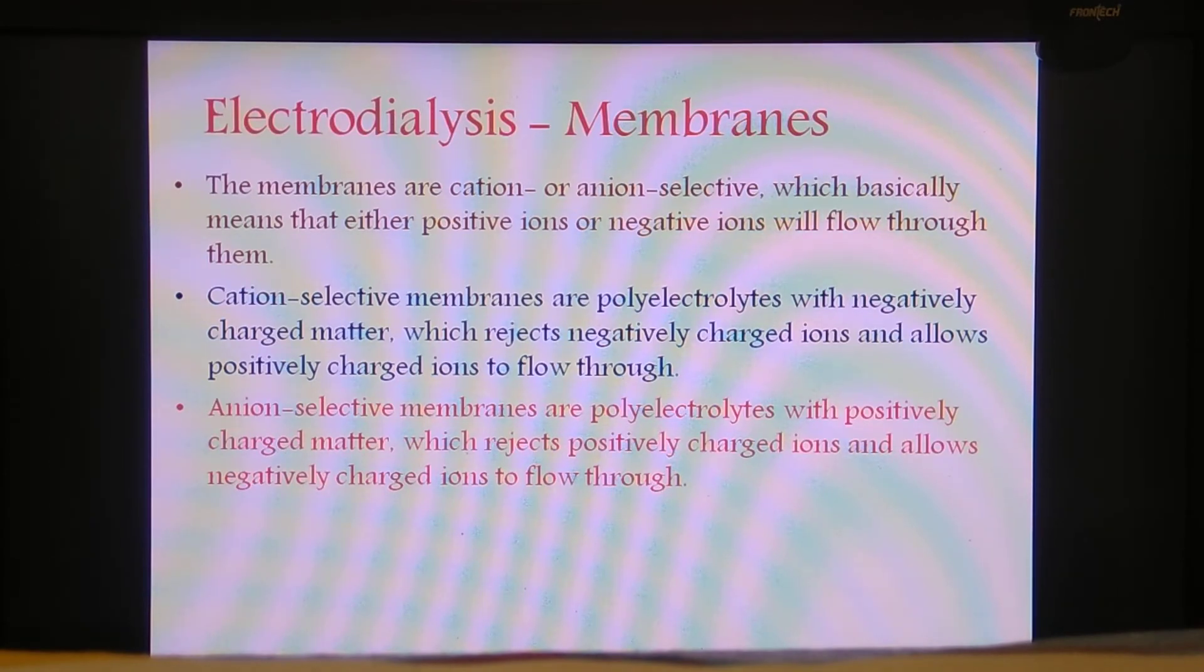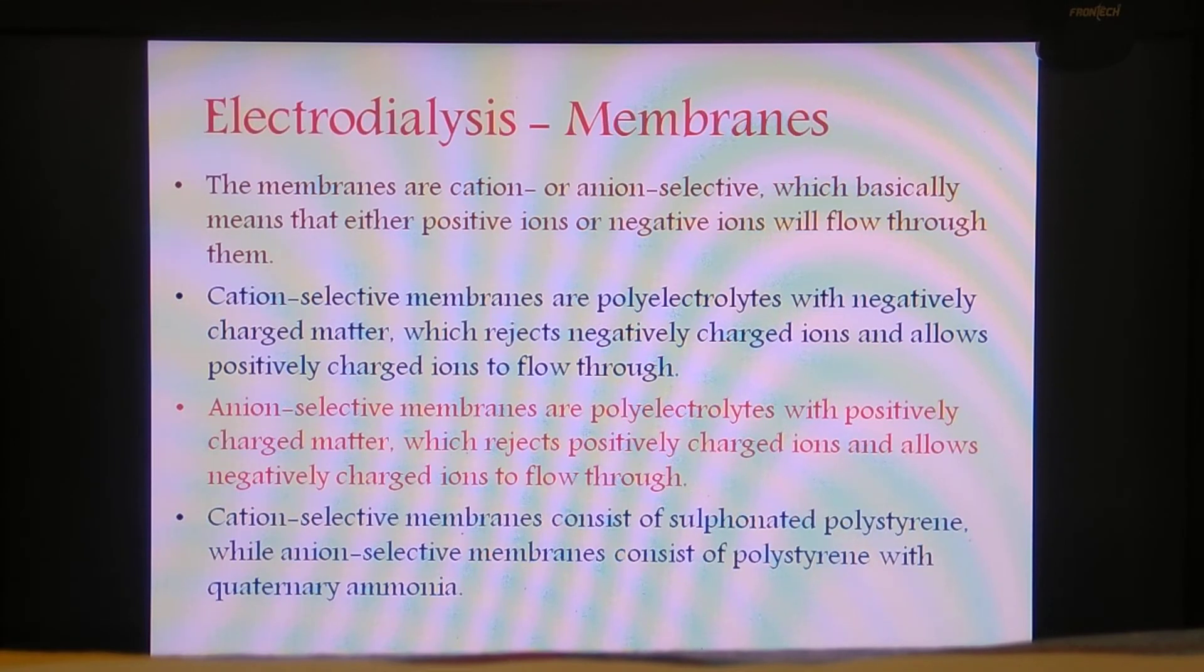This positively charged matter rejects the positive ions and allows only the negatively charged ions or anions to flow through it. What are these cation and anion selective membranes made up of? A cation selective membrane consists of sulfonated polystyrene which is a polymer, whereas an anion selective membrane consists of polystyrene with quaternary ammonium salt. This quaternary ammonium salt being positively charged will repel the positively charged ion and allow only the negatively charged ion to flow through it.